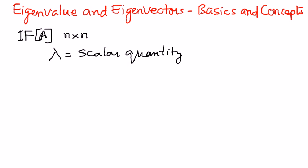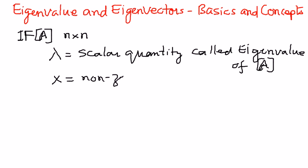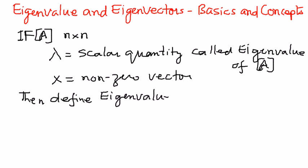We'll call this scalar quantity called eigenvalue of the given matrix A. And if we have x as a non-zero vector, then we can define the eigenvalue and eigenvectors as follows. We can define eigenvalue and eigenvectors as follows.